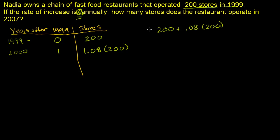Let me make that clear. 200 plus 0.08 times 200. Well, this is just 1 times 200 plus 0.08 times 200. That's 1.08 times 200.